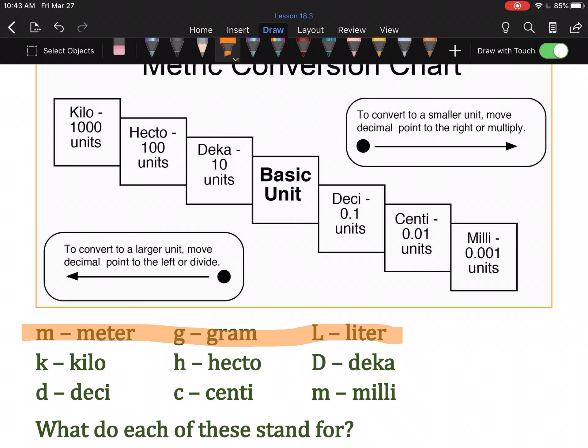H, the prefix is hecto. Hectometer, HM. Hectogram, HG. Hectoliter, HL. We use a capital D for deca, and that's because we need a lowercase d later for deci. So, capital DM is decameter. Capital DG is decagram. And capital D, capital L is decaliter.